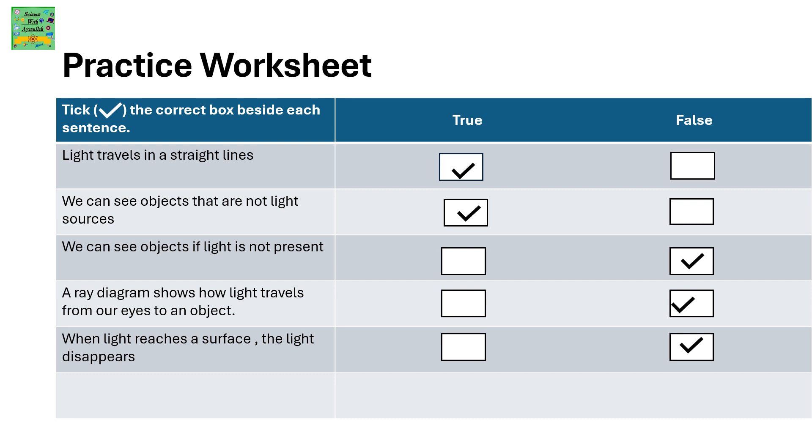We can see the book even though a book is not the light source. We can see objects if light is not present. False.